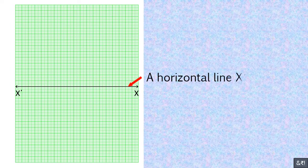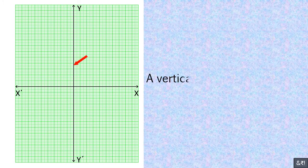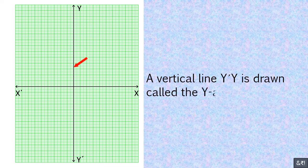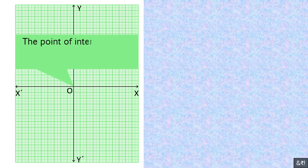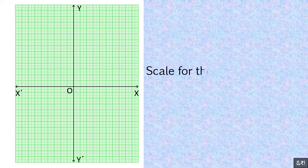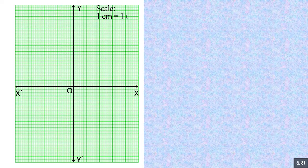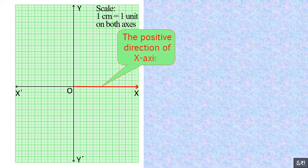A horizontal line x-x is drawn, called the x-axis. A vertical line y-y is drawn, called the y-axis. The point of intersection of the x-axis and y-axis is called the origin, denoted by O. The scale for the graph is written in the top right corner of the graph paper. Scale: 1 cm equals 1 unit on both axes.